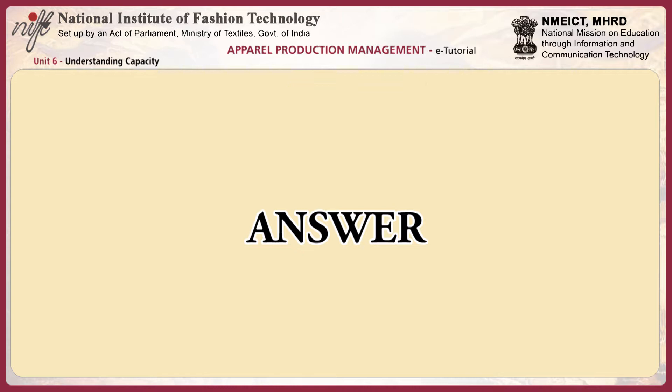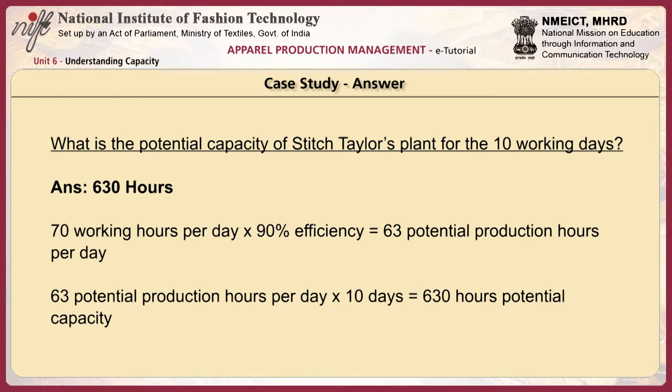What factors should be considered in deciding whether to accept the order? First, let us understand how to calculate the potential capacity of this plant for 10 working days. We have 7 hours of work per day; for 10 working days, that would be 70 working hours. With a 90% efficiency, we would ideally have 70 × 90% = 63 potential production hours per day.